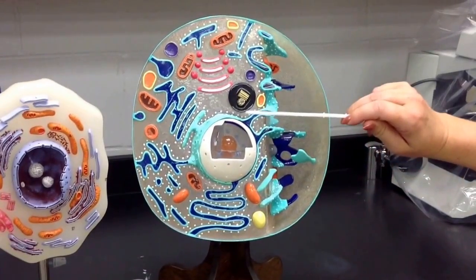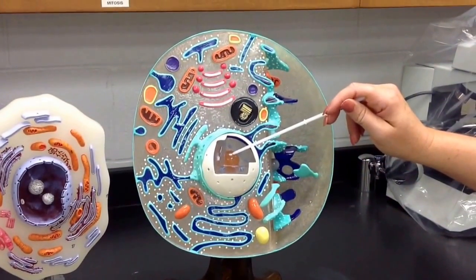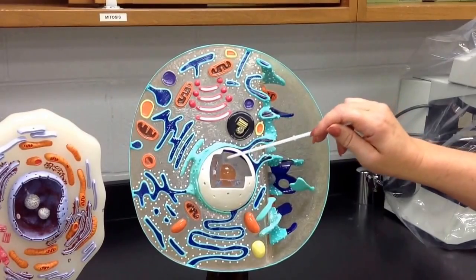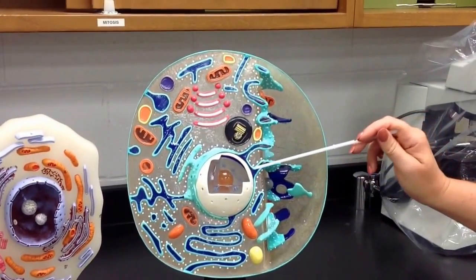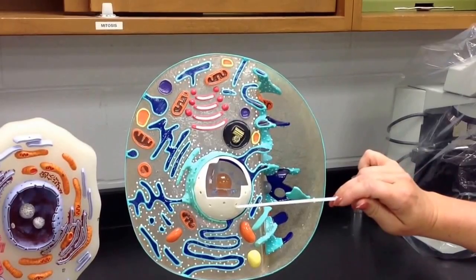Inside the nucleus you have the nucleolus and the chromatin which is the DNA. Around the nucleus you have the nuclear envelope and the nuclear envelope has in it the nuclear pores.